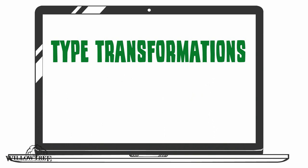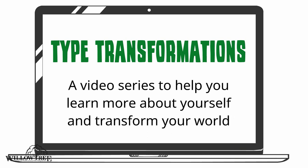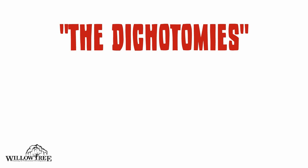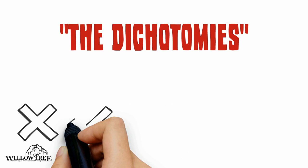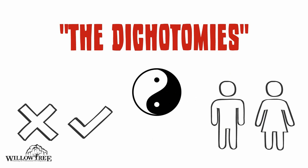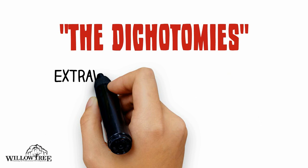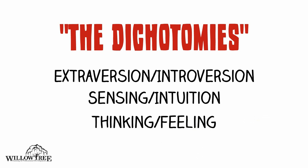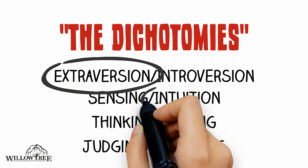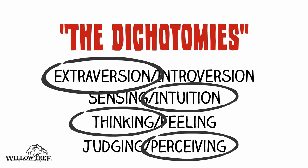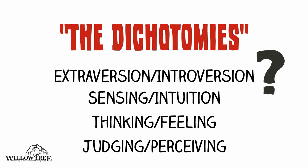Welcome to Willow Tree Training's Type Transformations, a video series to help you learn more about yourself and transform your world. In this video we will explore one of the dichotomies of personality type theory. A dichotomy is a difference between two completely opposite ideas or things. Your personality type is made up of four preferences chosen from four dichotomies. Let's explore these preferences — see if you can figure out which one fits you best.